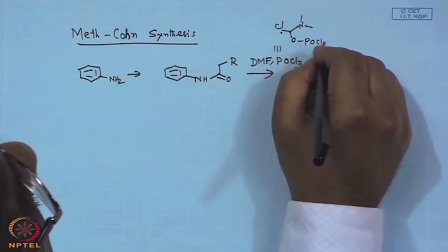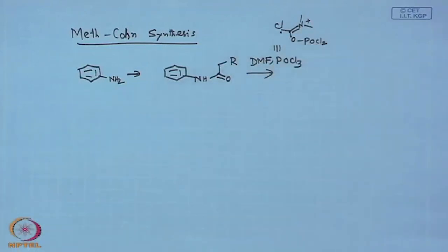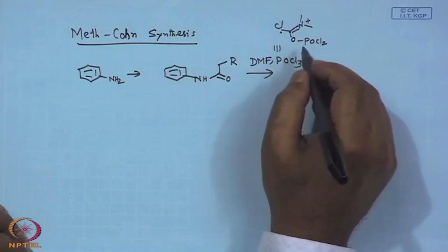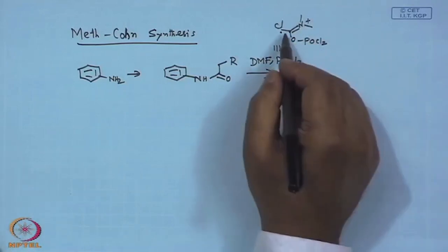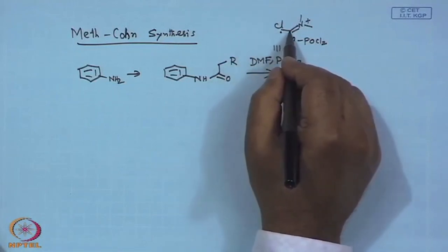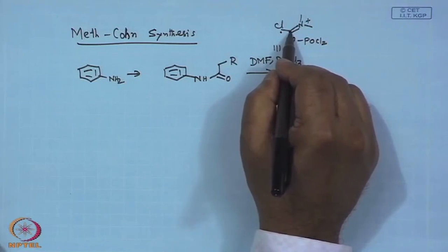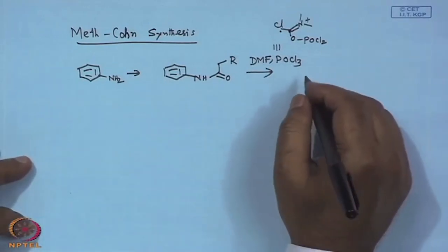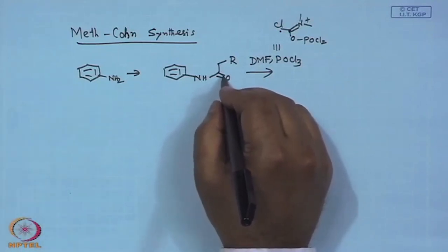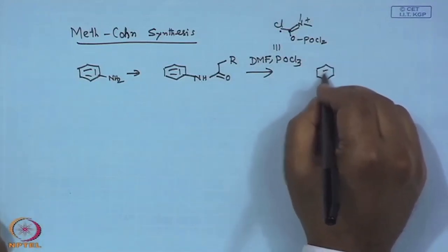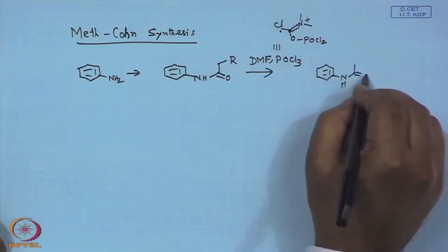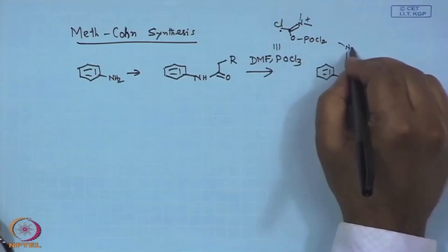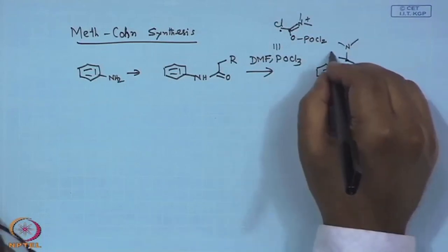The Vilsmeier reagent is formed when the oxygen of DMF displaces one chlorine from POCl3, creating a very active electrophile with a leaving chlorine group. Any nucleophile attacks the alpha carbon, then chlorine is lost, resulting in one-carbon homologation. The product has an additional carbon with a chlorine substituent.